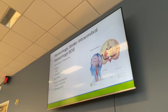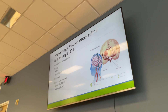Hemorrhagic strokes are spontaneous and progressive — unlike the sudden onset of embolic strokes, these progressively decline over minutes to hours due to ongoing bleeding. The longer it continues, the more severe it becomes.